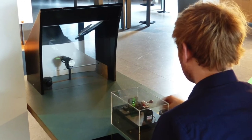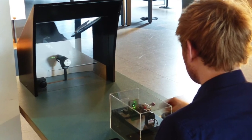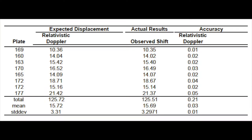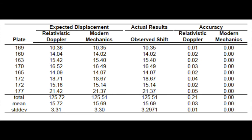In fact, if we look at one specific experiment, the Ives-Stilwell experiment, we see that relativity predicts 21.42 as the answer, and the experimental result was 21.37. The difference of 0.05 is actually pretty good. That is, until you see that the modern mechanics prediction was 21.37 exactly, just like the experimental result.